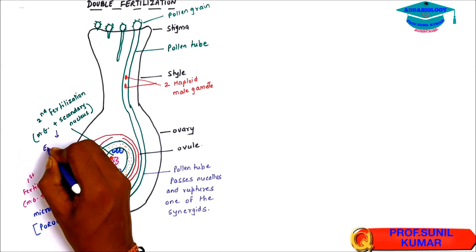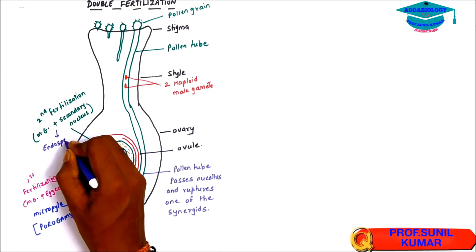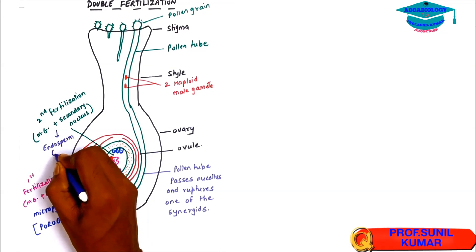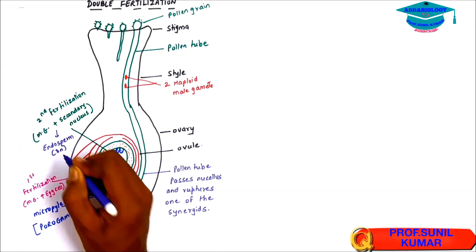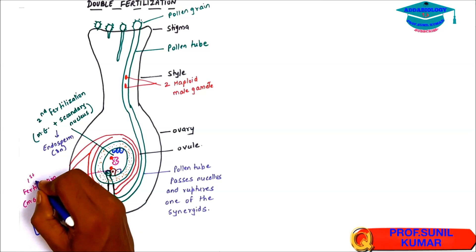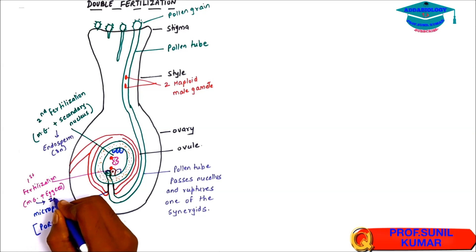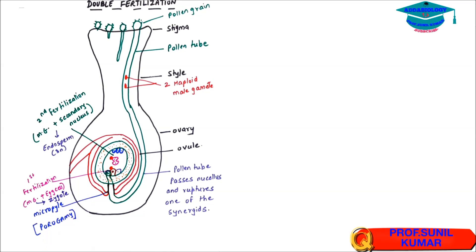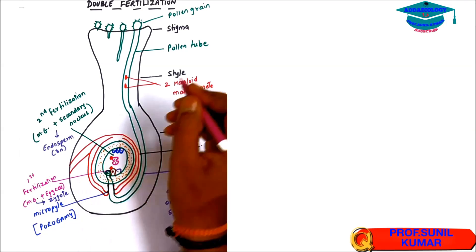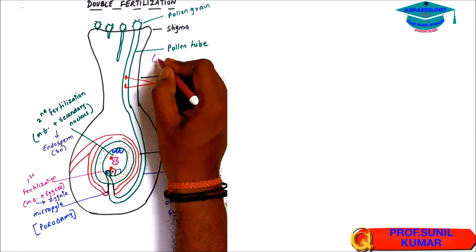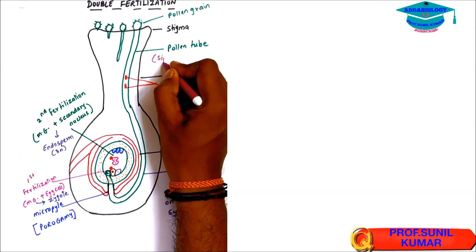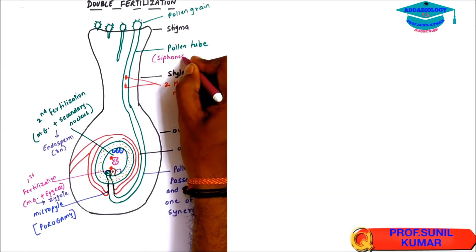These are the most important parts to understand in double fertilization. Since both male gametes are used, we call it double fertilization. Fertilization through the pollen tube is siphonogamy — the word 'siphono' refers to the pollen tube and 'gamy' means marriage.